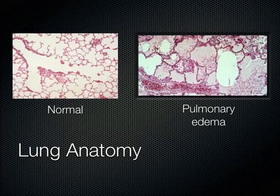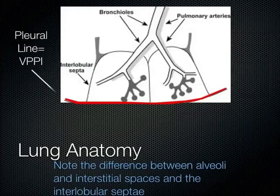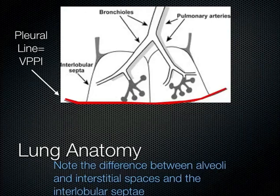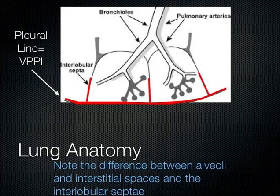The pleural line is also referred to as the VPPI — the visceral parietal pleural interface — where the visceral and parietal pleura come together and move on each other. The terminal bronchioles go all the way to the periphery of the lungs, and the interlobular septi come up to the surface perpendicularly. Most people have interlobular septi spaced about 7 millimeters apart — remember that approximate spacing.